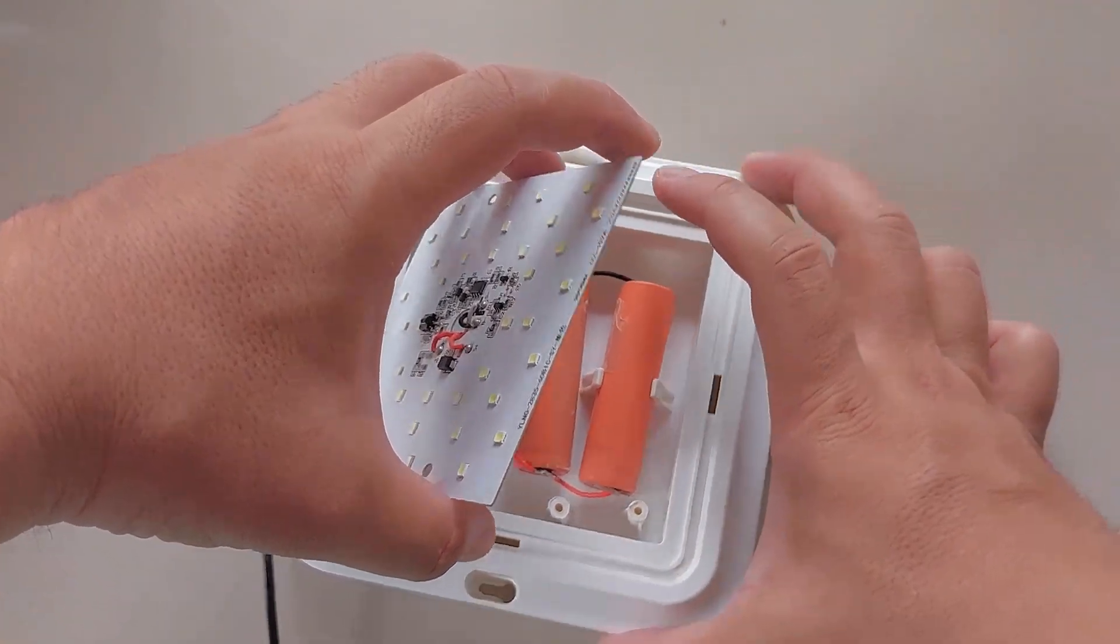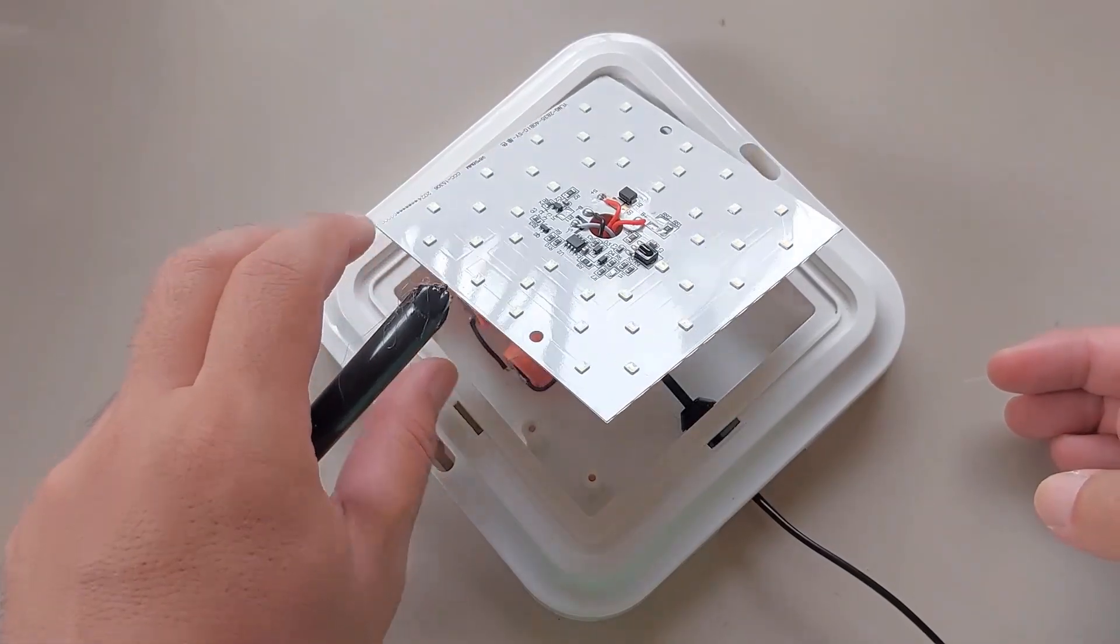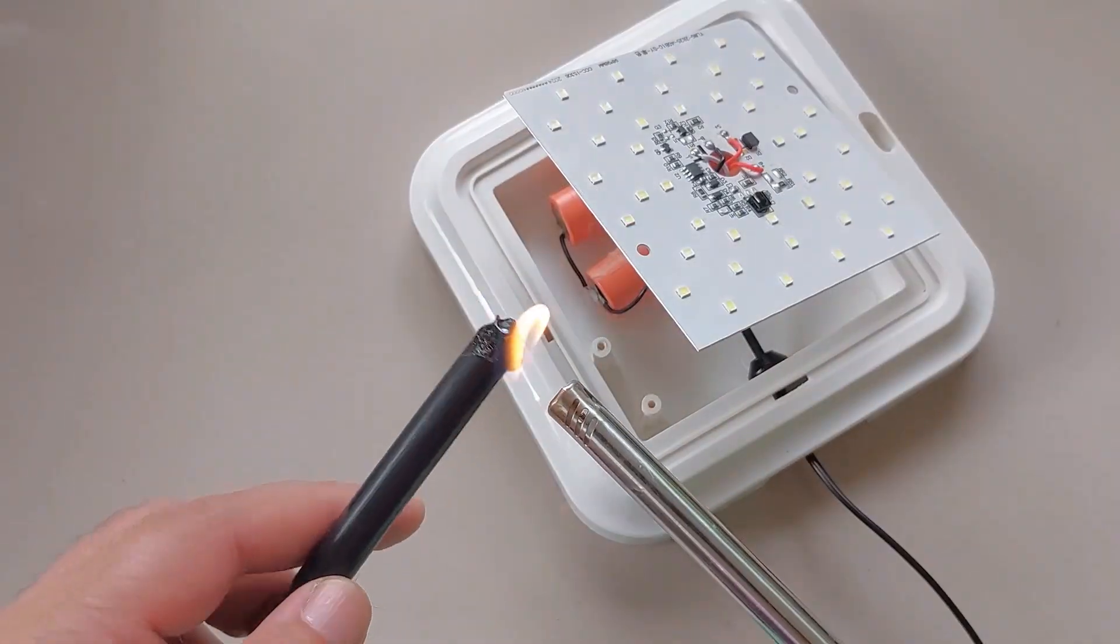Connecting the batteries is pretty easy. Just connect them in parallel with the red wire on the positive terminal and the black wire on the negative terminal of the new batteries.